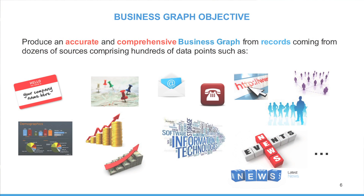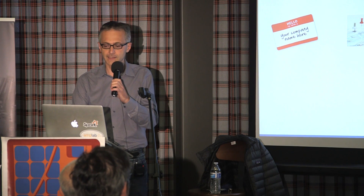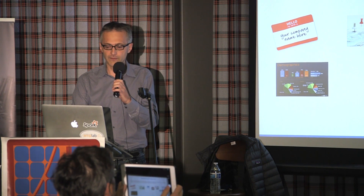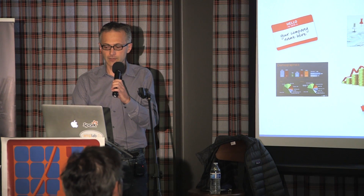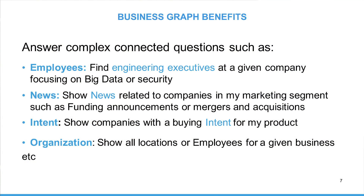Our business graph is used by all our customers. It has to be both comprehensive and accurate across all industries, as typically our customers use our software to create new campaigns like email, phone, and sales campaigns. So we first have to acquire a lot of data coming from dozens of sources, including business name and address, emails, phone numbers, employee information, demographics, financial data, technology used within the business, news about the company, intent data, and so forth.